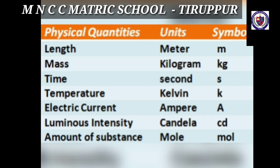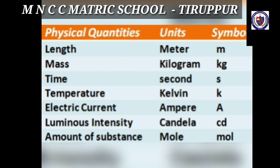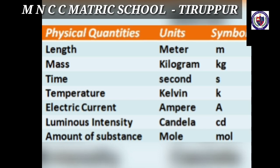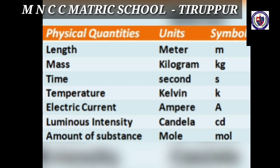Fundamental quantities and derived quantities: physical quantities are generally classified into two types — fundamental quantities and derived quantities. A set of physical quantities which cannot be expressed in terms of any other quantities are known as fundamental quantities. Their corresponding units are called fundamental units.